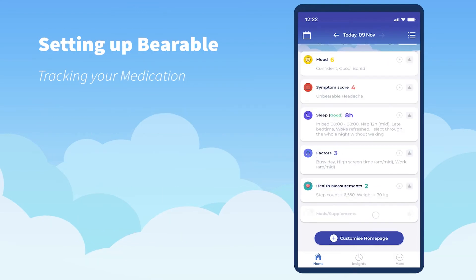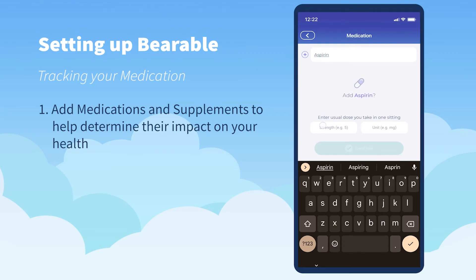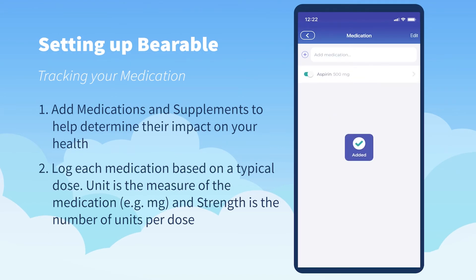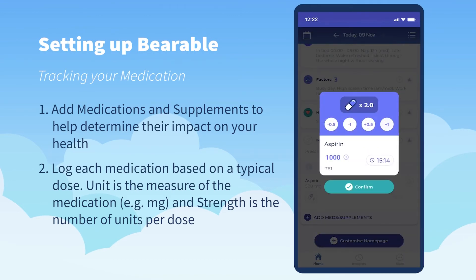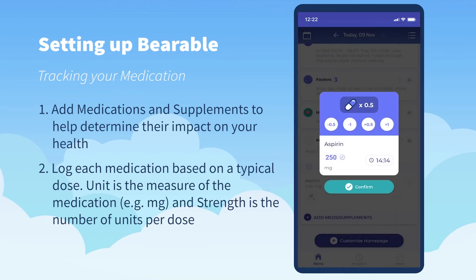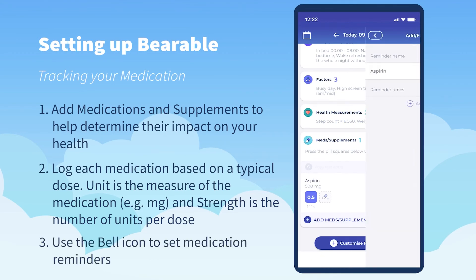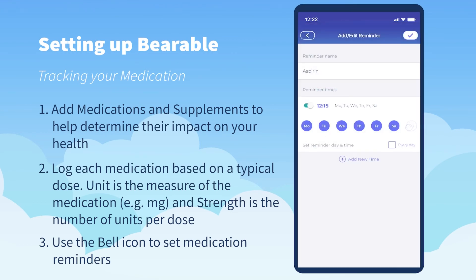Finally, here we'll look at meds and supplements. This starts out blank — we'll enter aspirin as an example. Strength is the amount and unit is the measurement, so here we've got 500 milligrams of aspirin, which is a typical dose. To log that, you press the pill icon and press plus one to double the dose, or minus 0.5 to half the dose. You can also change the time that you took the dose to log past entries. You can also set medication reminders using the bell icon, which lets you set as many different reminders as you'd like for each medication — just select the time and day of week and you'll be sent a push notification.